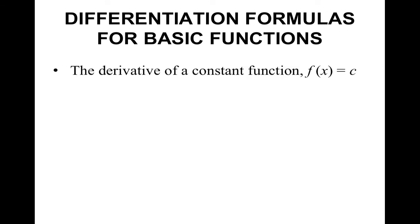The first one is for a constant function, so f of x equals some constant. If you think about what a constant looks like on a graph, it's just a horizontal line, and the slope of a horizontal line is 0. If you draw little tangent lines along the horizontal line, each of those tangent lines would also be horizontal. So the derivative of a constant with respect to x is equal to 0.